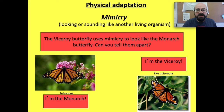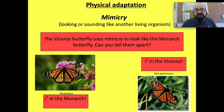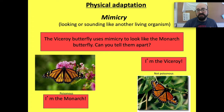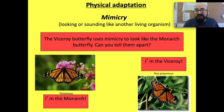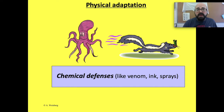The second physical adaptation is mimicry — looking or sounding like another living organism. The Viceroy butterfly uses mimicry to look like the monarch butterfly. Can you tell them apart? The monarch is poisonous and the Viceroy is not. So how does that help the Viceroy survive? Mimicry allows it to avoid being eaten, because if birds know the monarch is poisonous, they'll avoid both. So mimicry is a good physical adaptation.